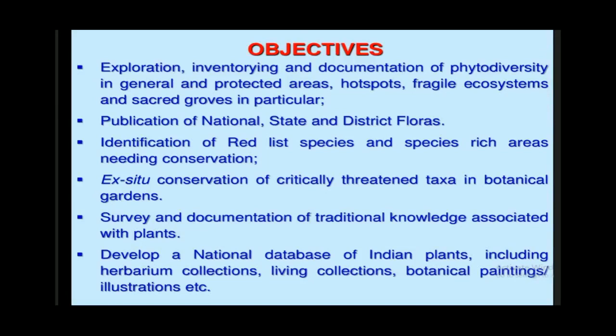The objectives of BSI include: exploring protected areas, hotspots, and fragile ecosystems; making a complete list of plant diversity for documentation; publishing national, state, and district floras; identifying species-rich areas and endangered species on the red list that need conservation; conserving critically threatened plants ex-situ in botanical gardens; conducting surveys throughout the country; and documenting plants in relation to traditional knowledge — that is, taking up ethnobotanical studies.